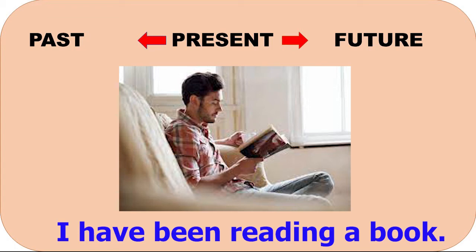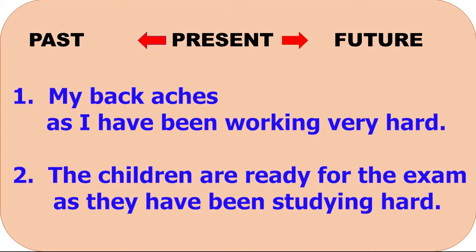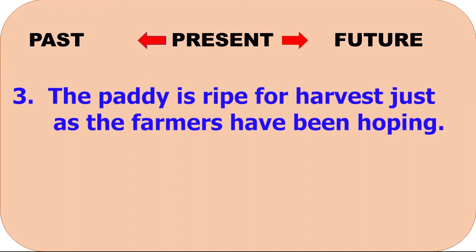Only in sentences like the ones I am going to show you now will you really find the perfect — that is the completion — and the continuous actions taking place one after the other. In these sentences, the reasons are given for what appears in the first part of the sentences. The first sentence is: 'My back aches as I have been working very hard.' The second sentence is: 'The children are ready for the exam as they have been studying hard.' The third sentence: 'The paddy is ripe for harvest, just as the farmers have been hoping.' Once you do exercises using about ten sentences in present, continuous, perfect and perfect continuous forms, you will get the hang of it. So keep repeating, and by the time you have followed about ten lessons, you will realize that your speech is coming to you naturally.